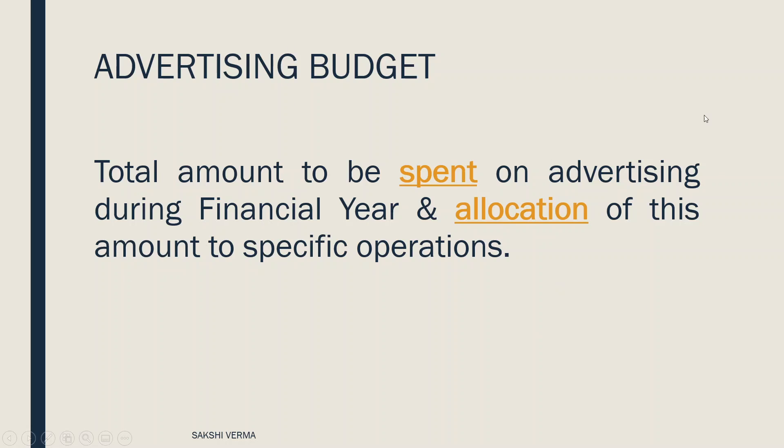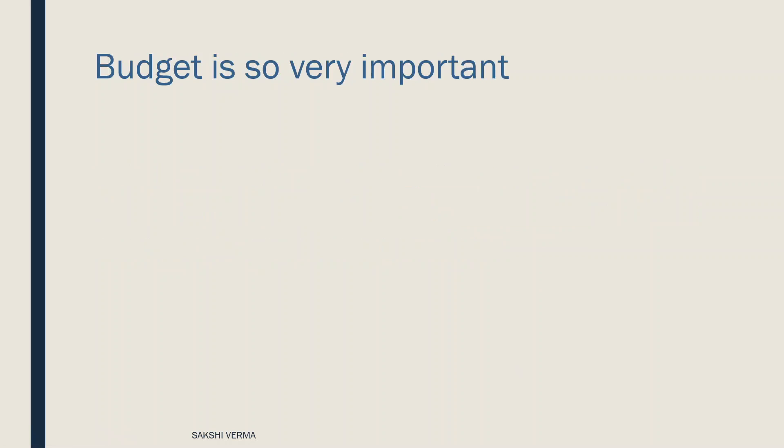The total process comes under setting up of advertising budget. Why is budget important? It is important because your objectives are influenced and limited by the budget. You may have high targets and high hopes — that with our ad we will reach millions of people, we will have this celebrity — but if you do not have the budget you cannot do that. So when you are setting objectives, budget is one of the constraints you need to take into consideration.